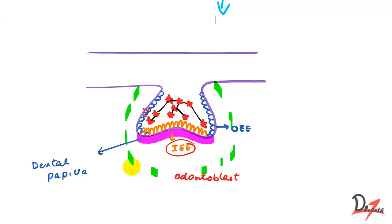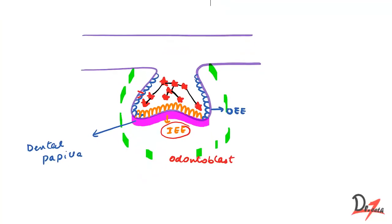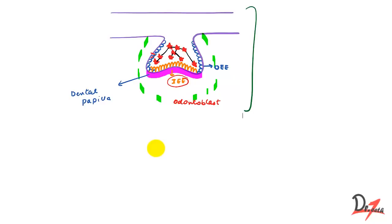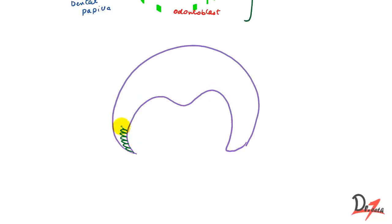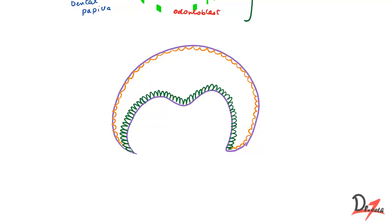You can check out the previous video on the cap stage for more detail. We'll begin assuming you have an idea of what the cap stage is. In this image, we can see that the epithelium has invaginated and the margins have continued to grow so that the enamel organ now assumes a bell shape.